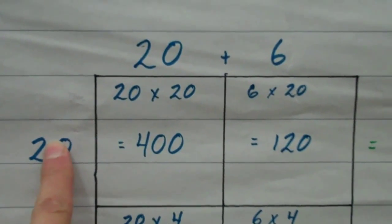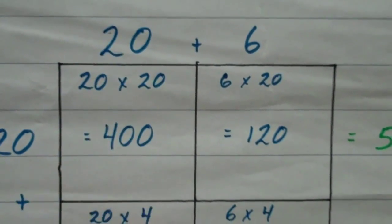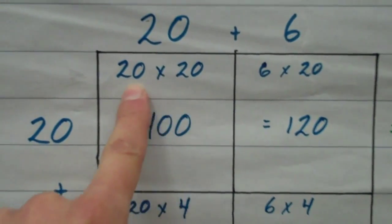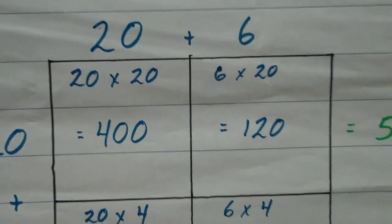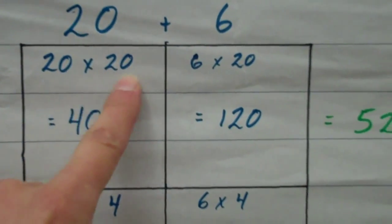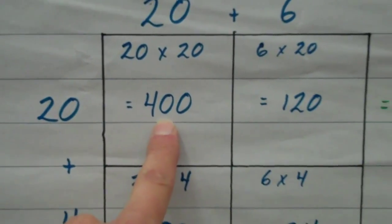In the first box right here, I take the two numbers that are on the outside of this box, 20 and 20, and I multiply those two numbers. Right here, I am showing my work, 20 times 20. I know that 2 times 2 equals 4. I need to add my two zeros back on, so the product of 20 times 20 is 400.